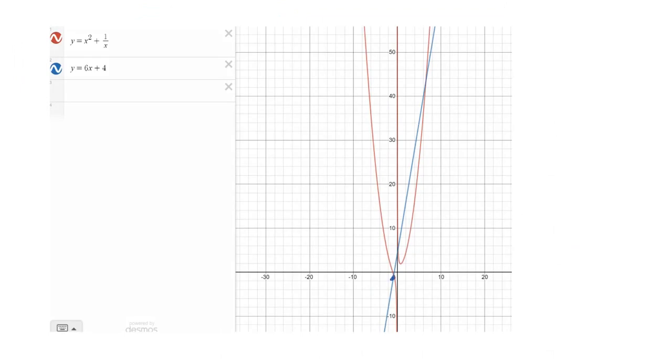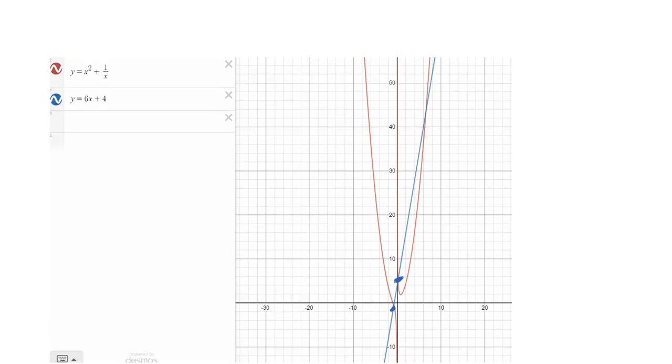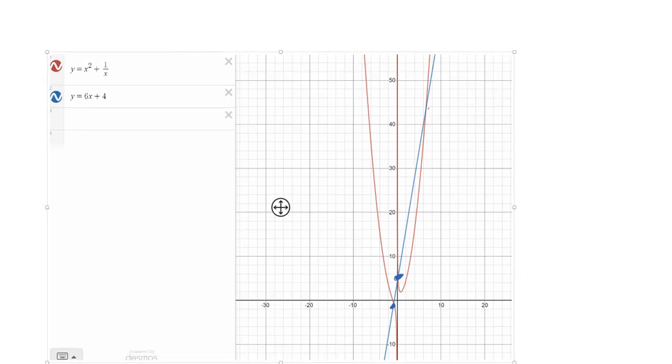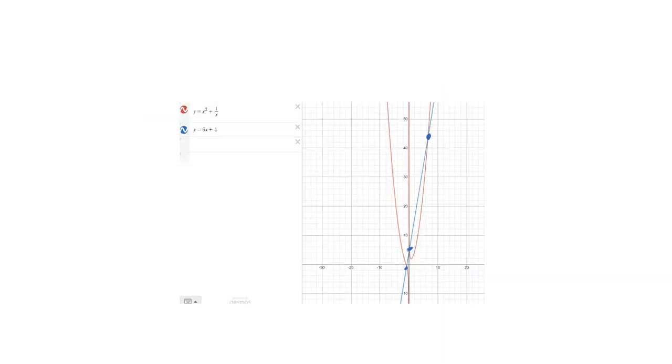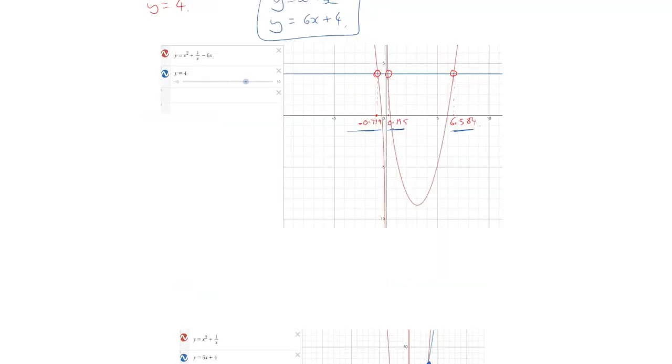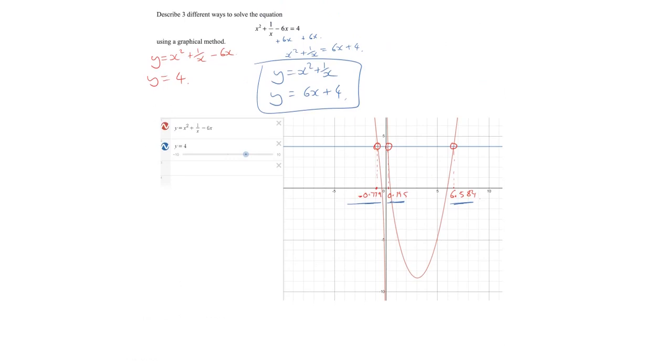We get exactly the same answers. That point there is minus 0.779 for its x-coordinate. There's another crossing here, which is 0.195. And just for the final proof, there's another one up here and that has an x-coordinate of 6.584. The x-coordinates of intersection are identical when we do that graph and that original graph as well.